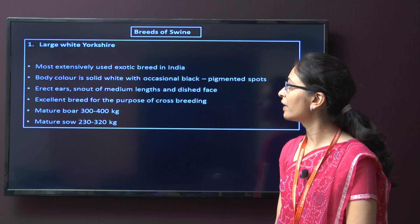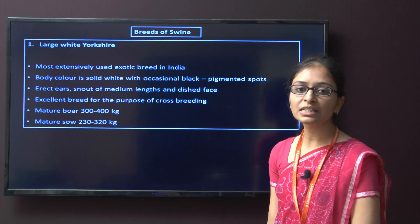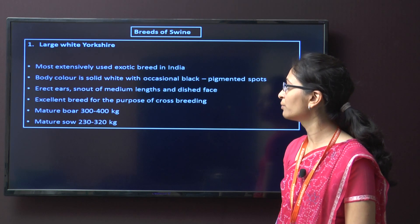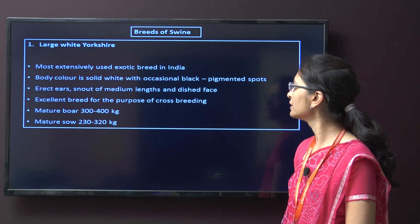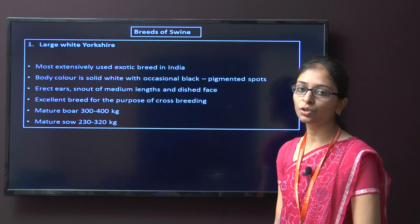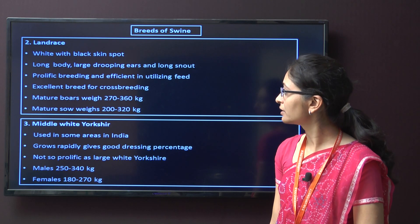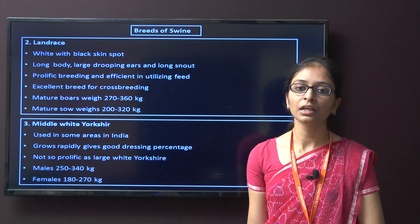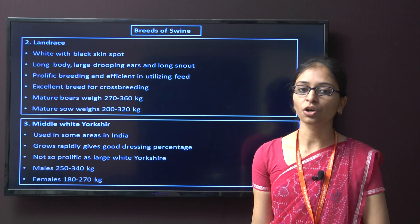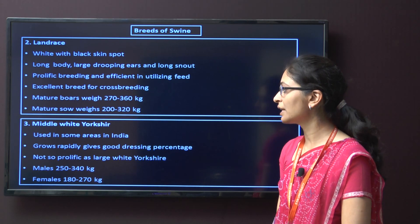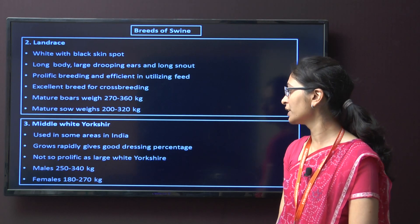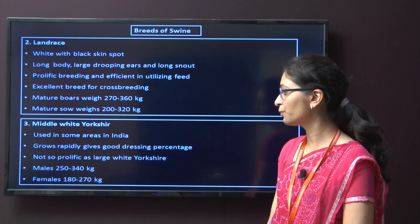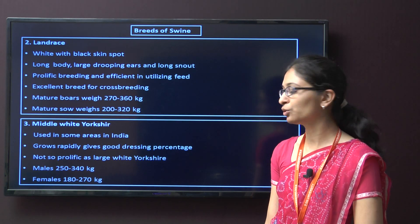Next are breeds of swine. The first is Large White Yorkshire. This breed of swine is the most extensively used exotic breed in India. Characteristics are solid white body colour, erect ears, medium-length snout, and dished face. It is an excellent breed for crossbreeding. Second is Landrace. This breed is white with black skin spots. Characteristics include long body, large drooping ears, and long snout, and it is an excellent breed for crossbreeding. Third is Middle White Yorkshire, used in some areas of India. These grow rapidly and give good dressing percentage, though not as prolific as Large White Yorkshire. The average body weight for male is around 250 to 340 kg and for female around 180 to 270 kg.